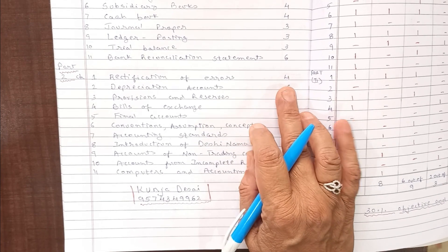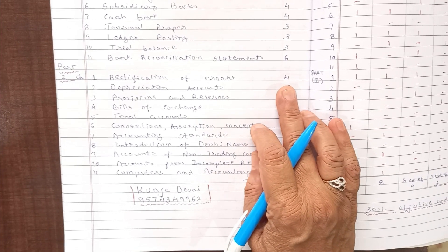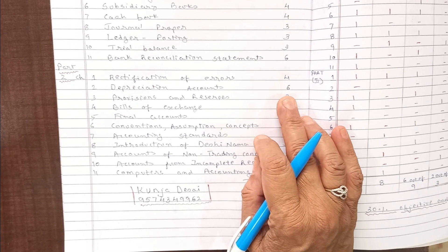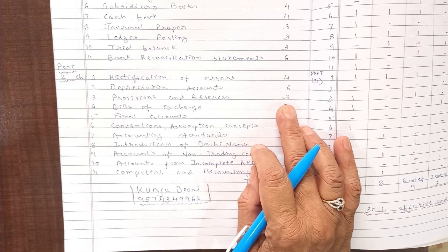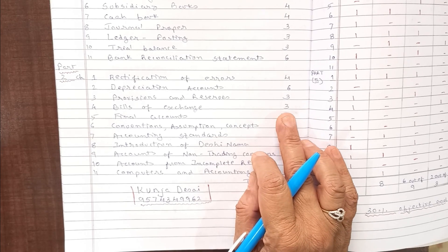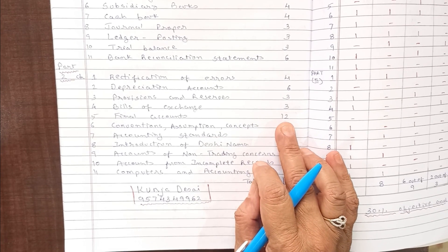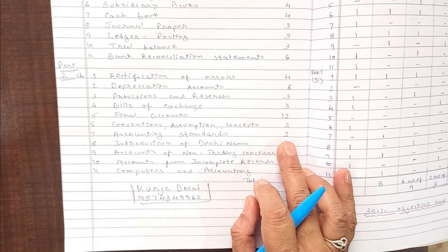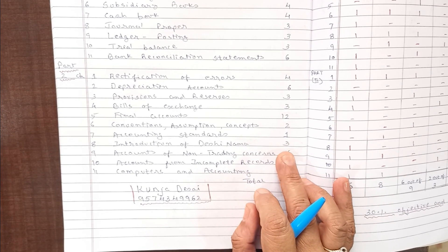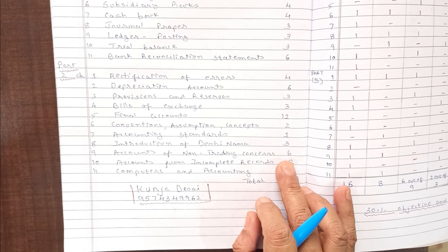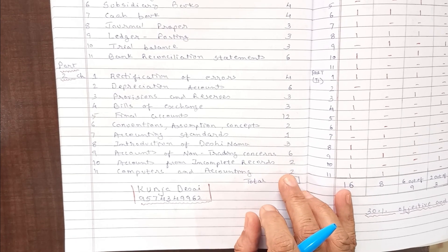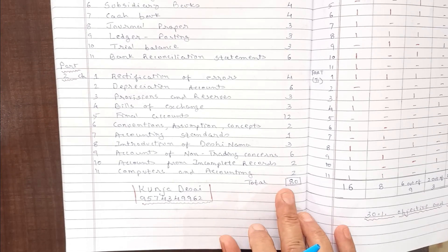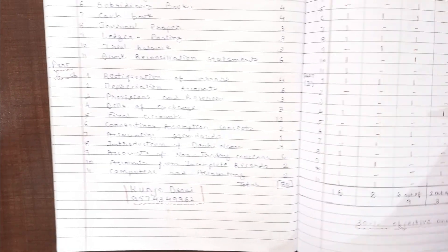Part 1, Part 2: Chapter 1 - 4 marks, Chapter 2 - 6 marks, Chapter 3 - 3 marks, Chapter 4 - 3 marks, Chapter 5 - 12 marks, Chapter 6 - 2 marks, Chapter 7 - 1 mark, Chapter 8 - 3 marks, Chapter 9 - 6 marks, Chapter 10 - 2 marks, Chapter 11 - 2 marks. The total is 80.